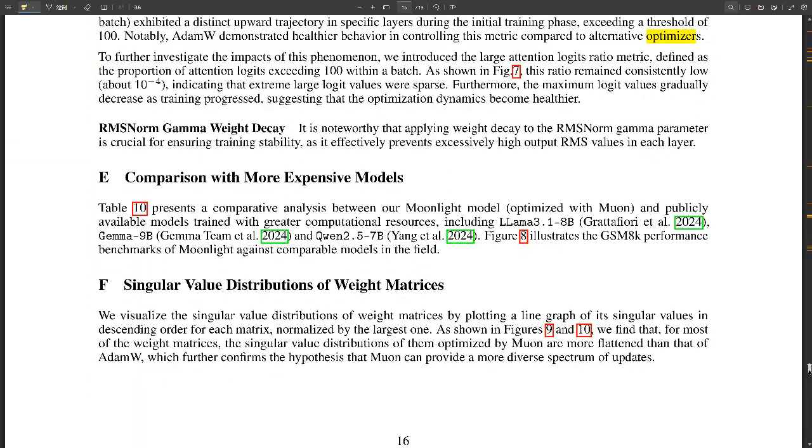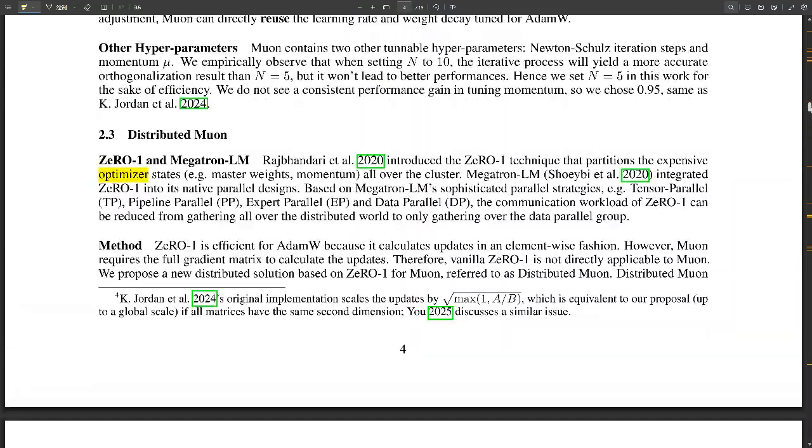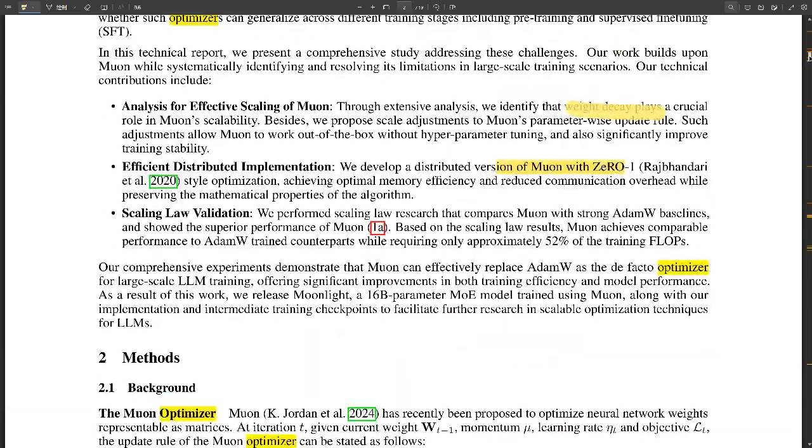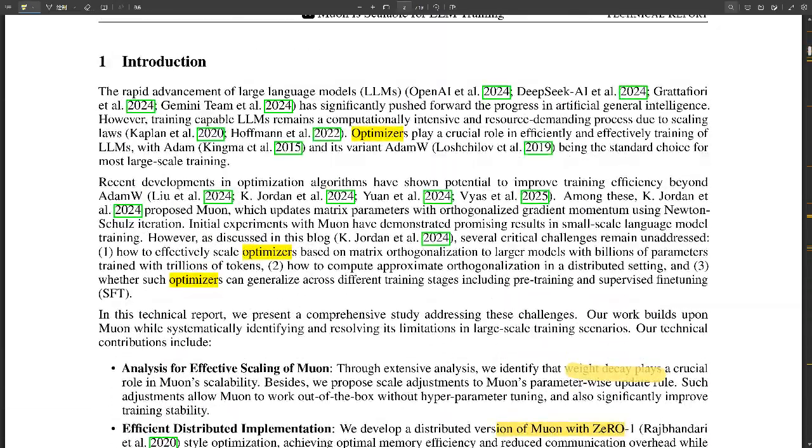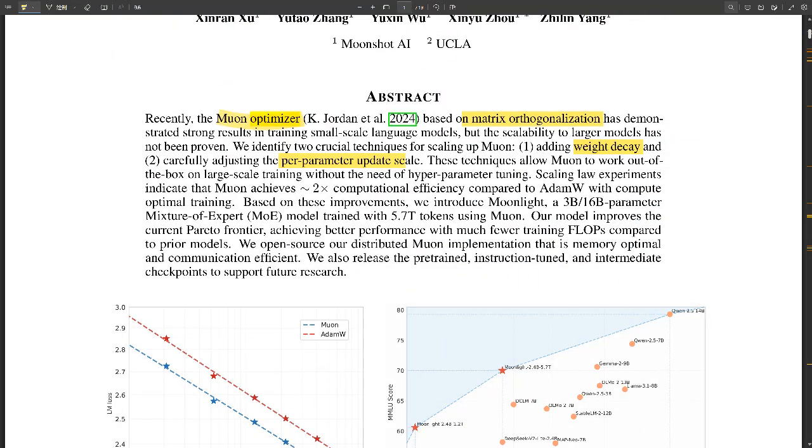So it's like instead of having this one giant warehouse storing everything, we have all these smaller warehouses kind of strategically located and they can share the load, if that makes sense. But I imagine coordinating all that adds some complexity, doesn't it? Oh, absolutely. It's not just plug and play. The researchers had to make a few adjustments to Muon's algorithm to make sure it would work in this distributed environment. Okay, tell me more about those adjustments. What did they have to do?